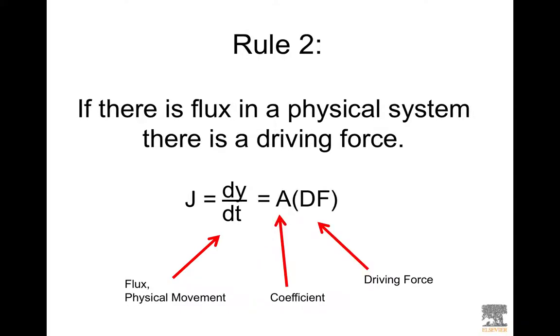Rule number two if there is a flux in a physical system there has to be a driving force. Things just don't move on their own. These can be different types of driving forces. There could be a concentration gradient, it could be a temperature gradient, it could be an electrochemical gradient, and it could be a voltage for example.